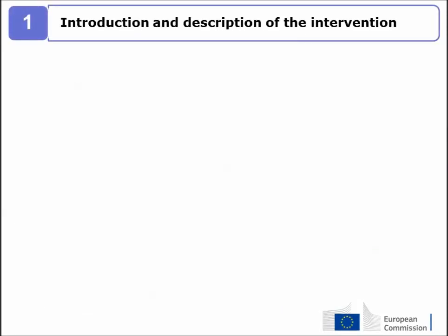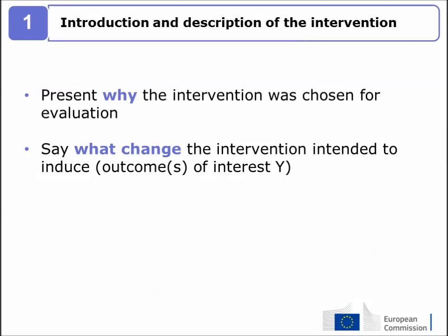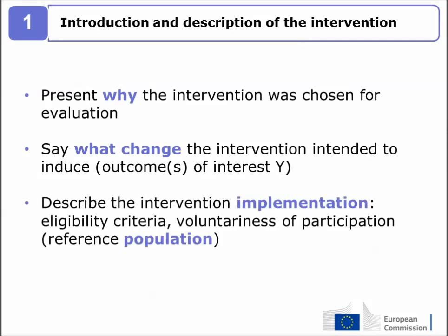The first section typically provides a general explanation of the intervention, program, or project to be evaluated. It is important to present why the intervention was chosen for evaluation by answering: what are we measuring, why is the evaluation required, and how will the managing authority use the results? Also state what changes the intervention intended to induce, describe the implementation process, and provide an accurate description of the selection of participants, including eligibility criteria.